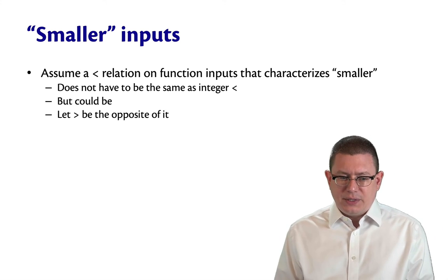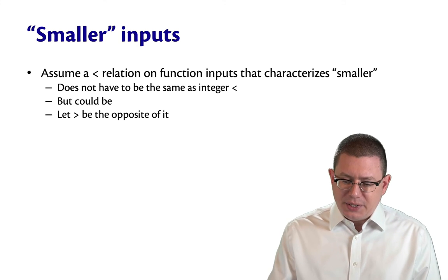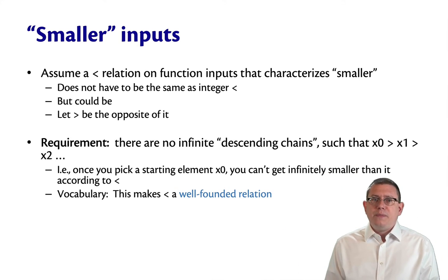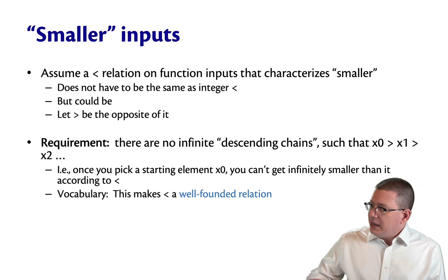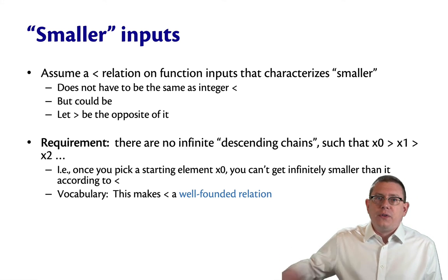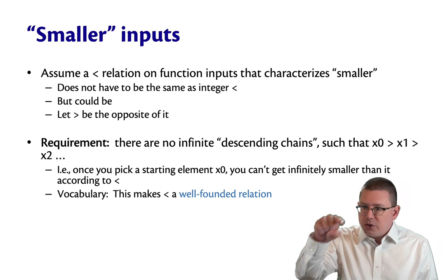Okay, whatever this relation is, of course, let greater than be the opposite of it. Here's what we mean. We're requiring that there are no infinite descending chains according to that order. What I mean by an infinite descending chain is a sequence of elements of the type: x0, x1, x2, x3, and so on, where the first one's bigger than the second, the second one's bigger than the third, and so forth. So you have this infinite chain downward where each element gets progressively smaller.